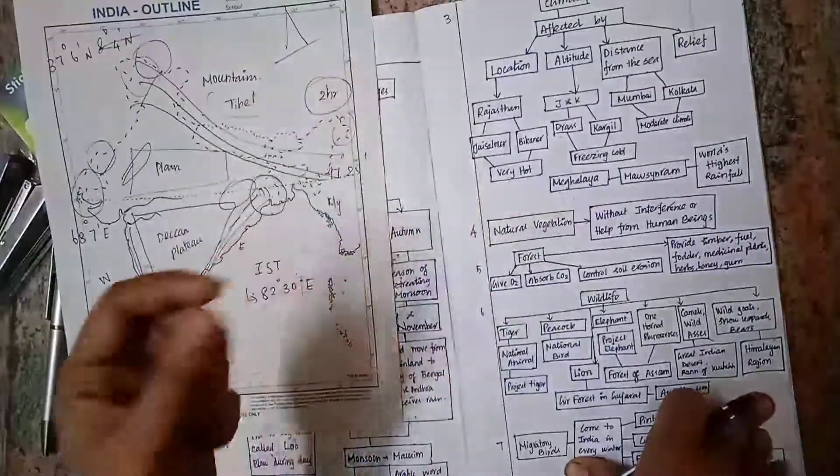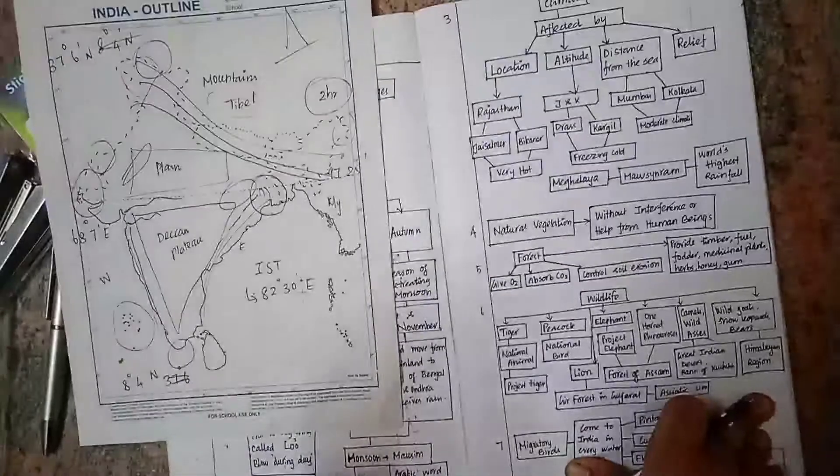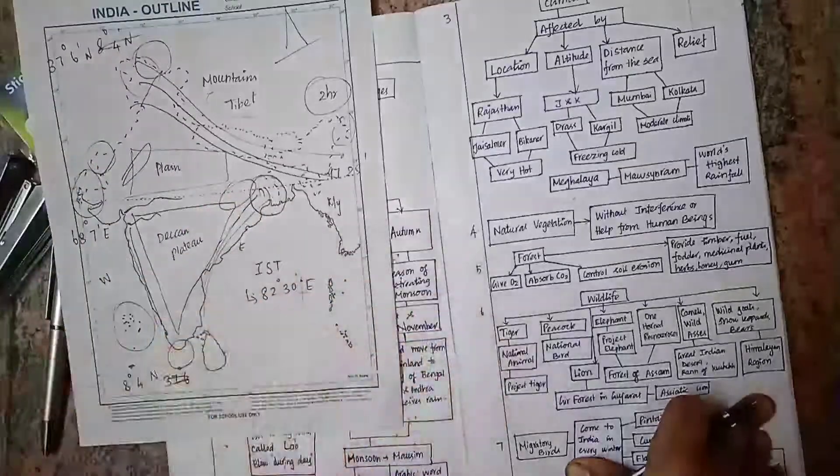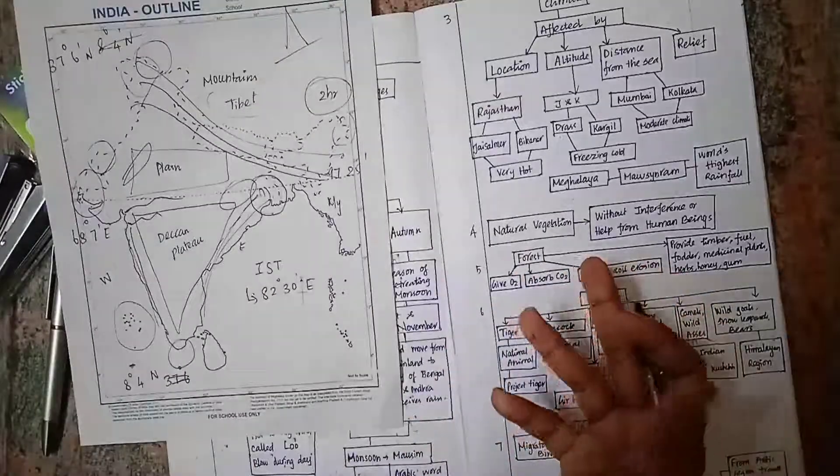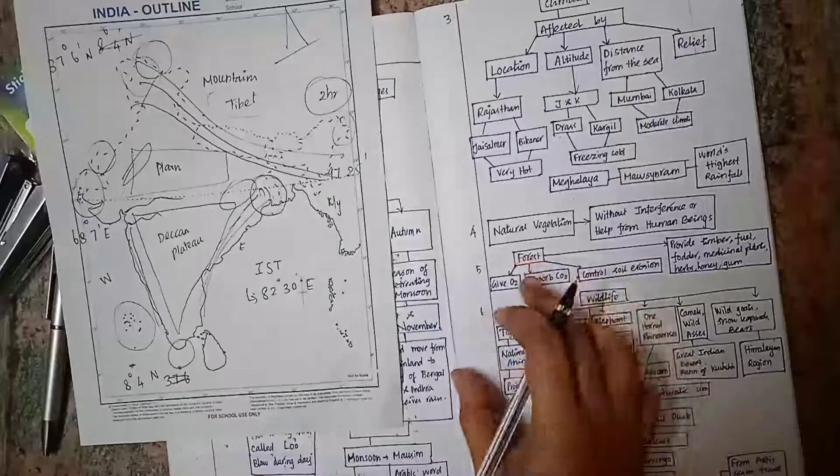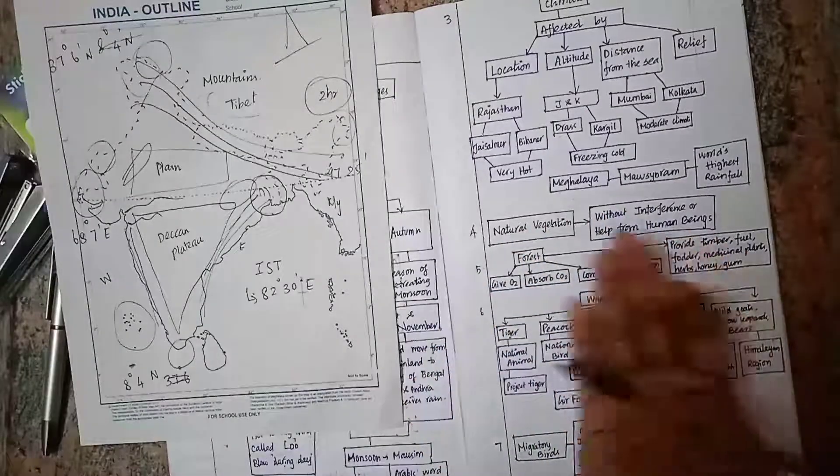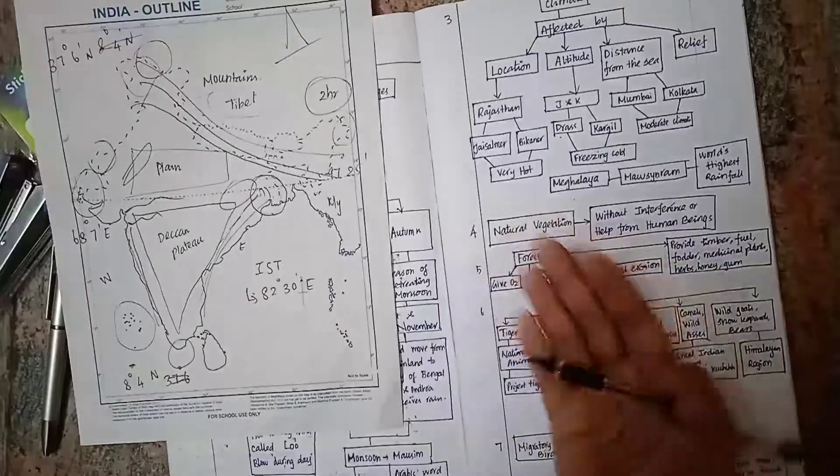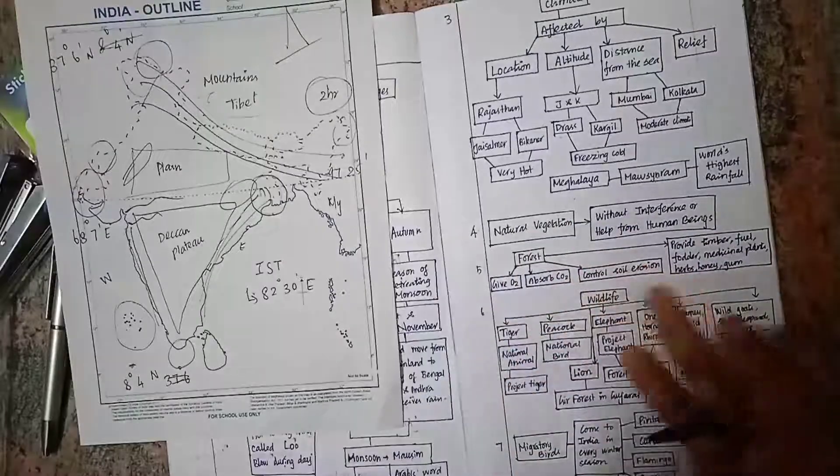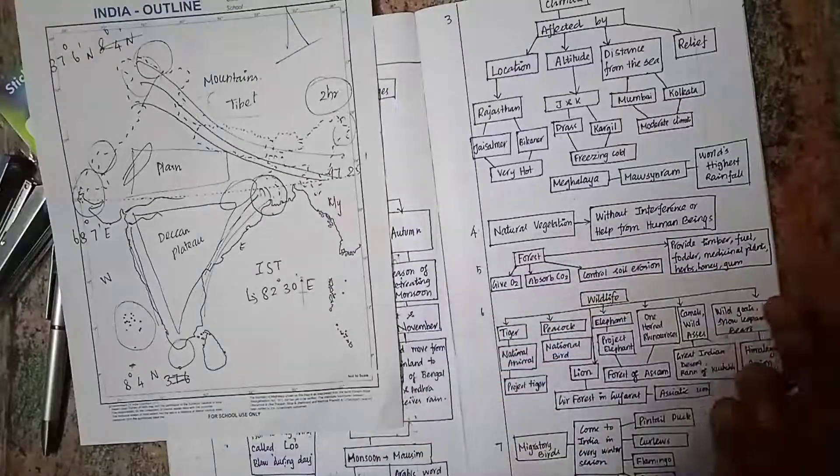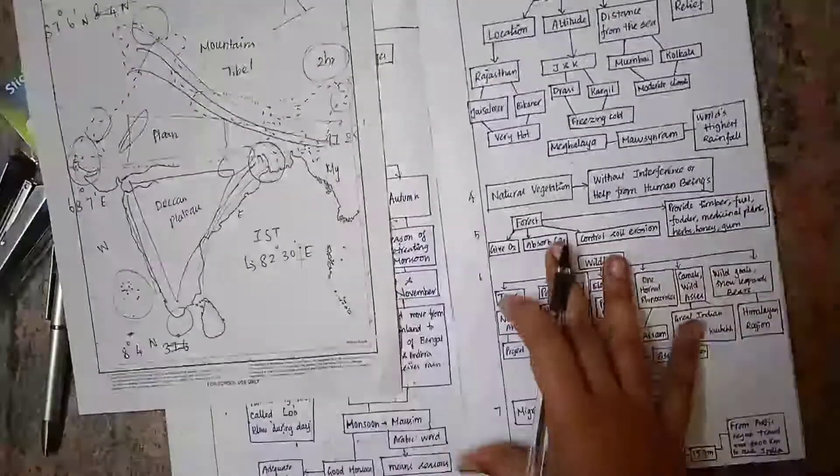Natural vegetation are trees and plants that grow without the interference of human beings. For example, forests grow without human interference. Forests are important for some features: they give oxygen, absorb carbon dioxide, control soil erosion, and provide timber and forest produce.